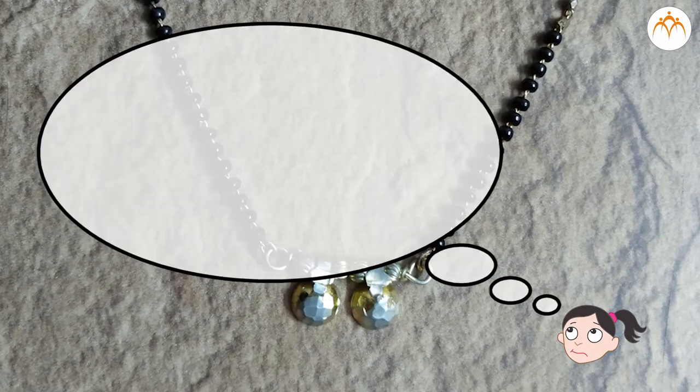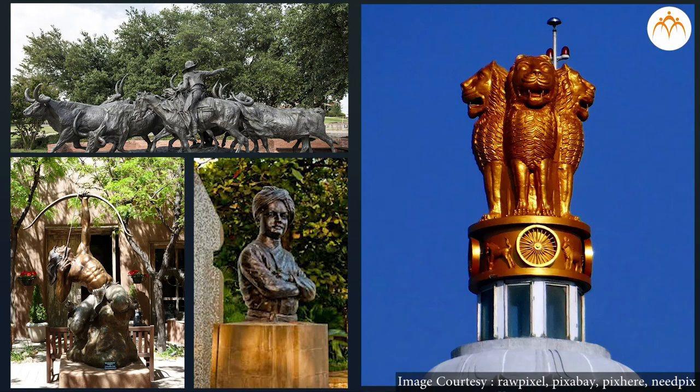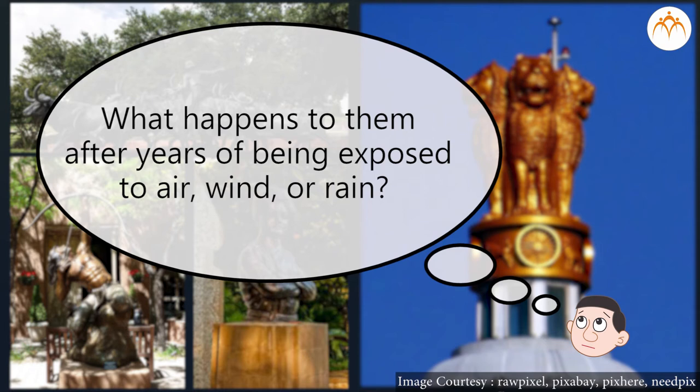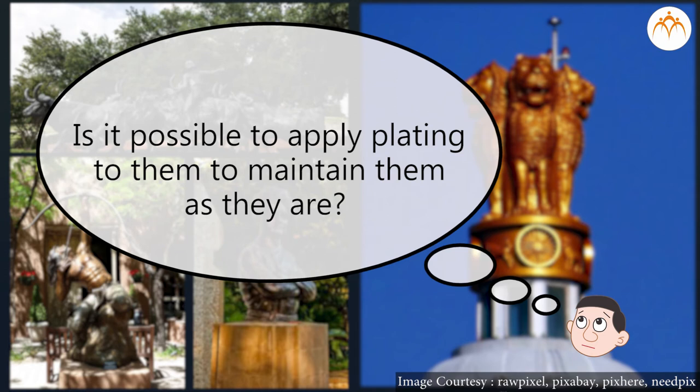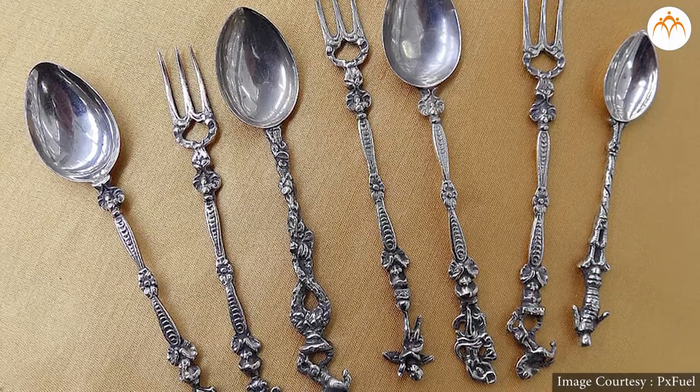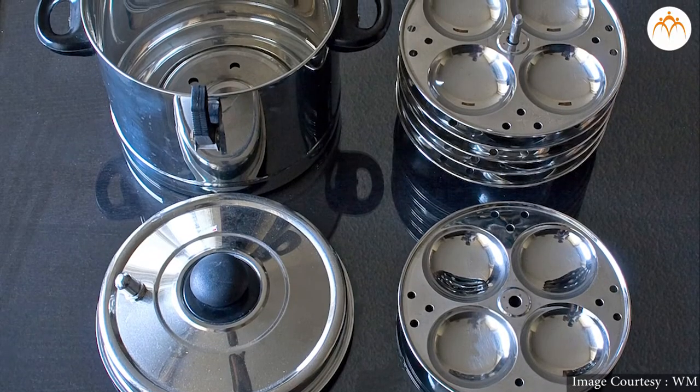What will happen if the plating goes off from a metallic object? What do you think about these statues? What happens to them over years of being exposed to air, wind, or rain? Why do they not change their color or corrode? Is it possible to apply plating to them? No. Have you ever wondered how certain utensils always shine for years? There is another method used in making these statues or utensils: a homogeneous mixture of two or more metals, or a metal with a non-metal, called an alloy.